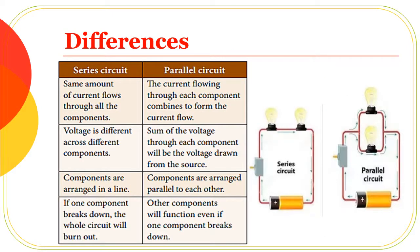The difference between series and parallel circuits: in a series circuit, the same amount of current flows through all the components, while the voltage is different across different components — V equals V1 plus V2 plus V3. In a parallel circuit, the current is different across each branch.